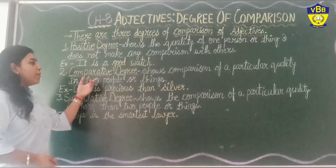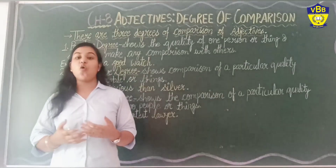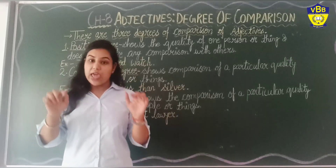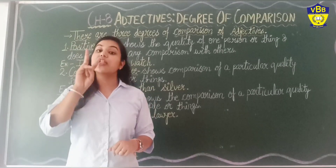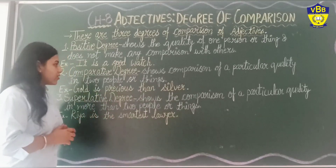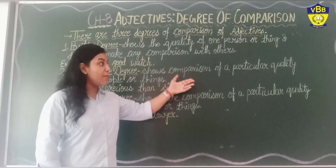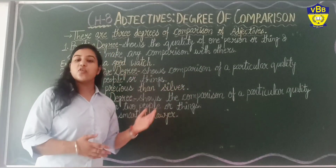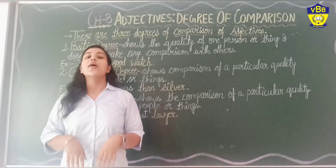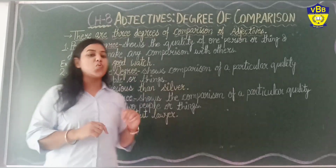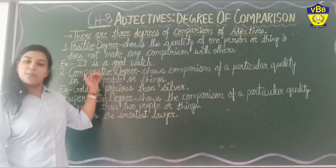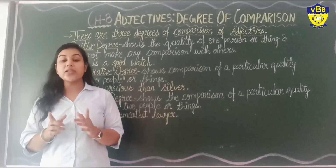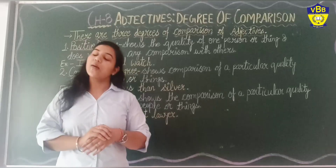Now the second one, Comparative Degree. Comparative Degree shows comparison of a particular quality in two people or things. When we have to make a comparison between two things, we use Comparative Degree, which shows the quality of a person or a thing between two things by making a comparison.